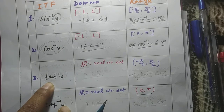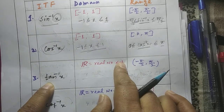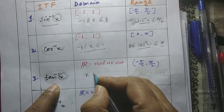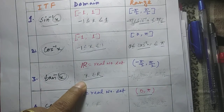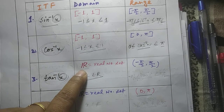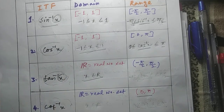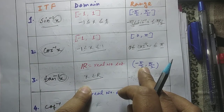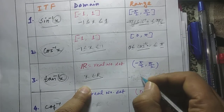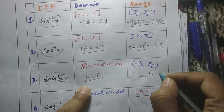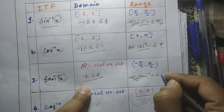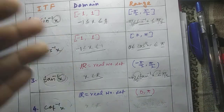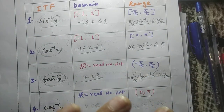Now come to the third one, that is tan inverse x. Here, the domain is the whole real number set R — for all real x, the function will be valid. The range is the open interval (-π/2, π/2) — meaning all values of tan inverse x lie strictly between -π/2 and π/2. It will never be equal to π/2, and it will never be equal to -π/2. It always lies strictly between -π/2 and π/2. That is the range of tan inverse x.